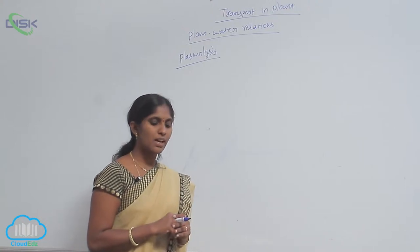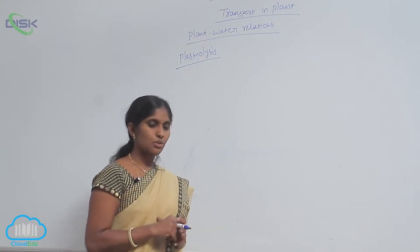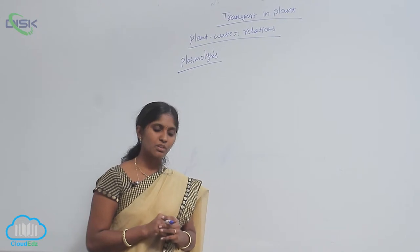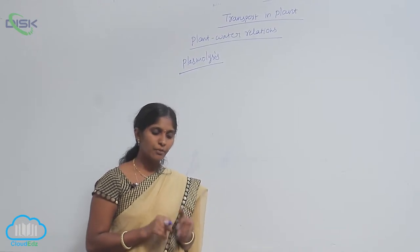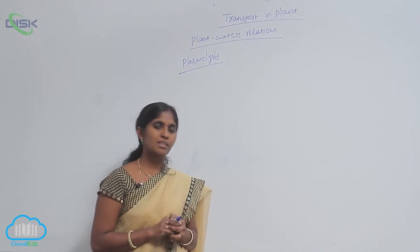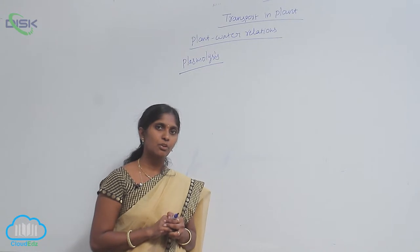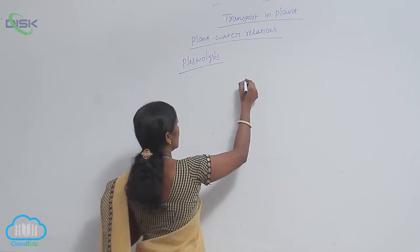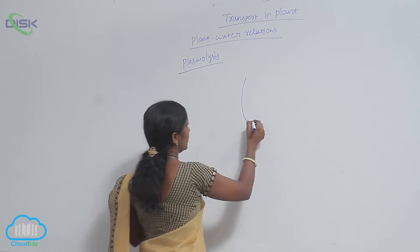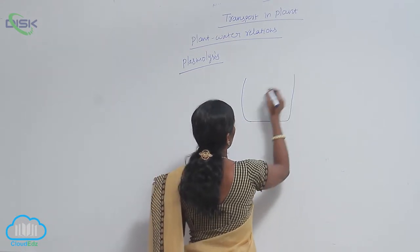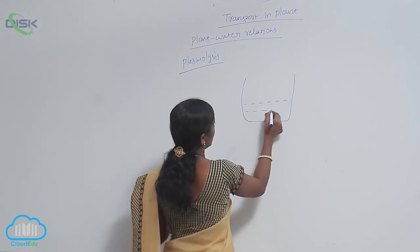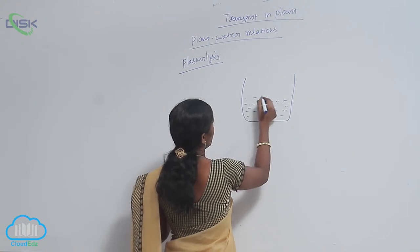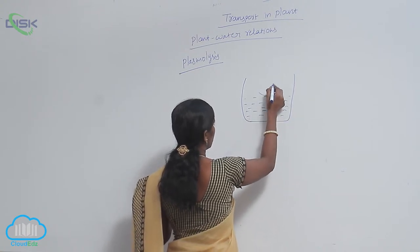Plasmolysis is the shrinkage of protoplast due to the osmotic diffusion of water from the cell to the external environment. Here, a plant cell is kept in a solution.